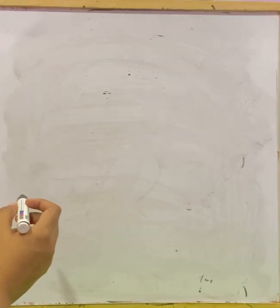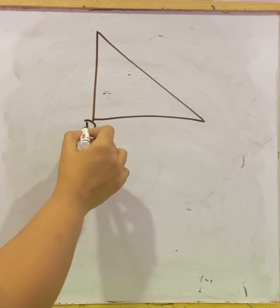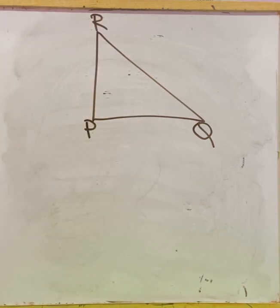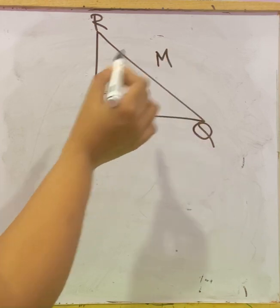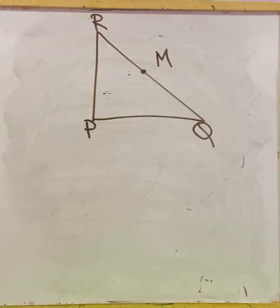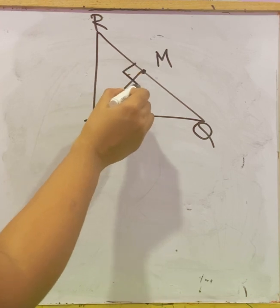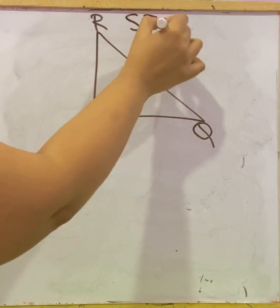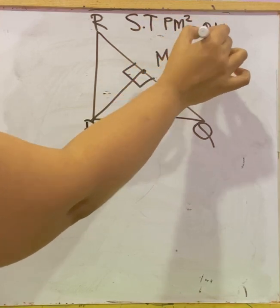Next problem: In △PQR, right-angled at P, M is a point on QR such that PM is perpendicular to QR (so angle PMQ = angle PMR = 90°). We need to show that PM² = QM × MR.